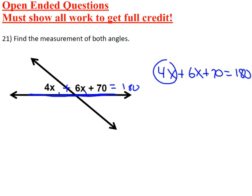The first thing I have to do is combine like terms because they're on the same side of the equal sign. You have 6x plus 4x, which is 10x, plus 70 equals 180.